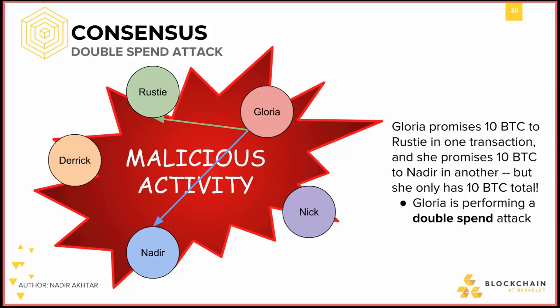If I try to convince anyone else that I own these 10 bitcoins, they'll all think I'm crazy because they've seen no evidence of me ever having received those bitcoins. The same applies to Nadir. In this scheme, where entities only see the transactions that directly involve them as a sender or recipient, it is impossible to come to consensus on a history of transactions because of dishonest actors. Thus, it is impossible to prevent these double spend attacks with our current model of consensus.